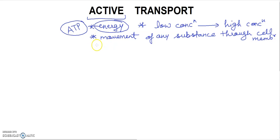Active transport is always against the concentration gradient. The molecules or substances move against the concentration gradient — meaning movement goes toward the high concentration side.